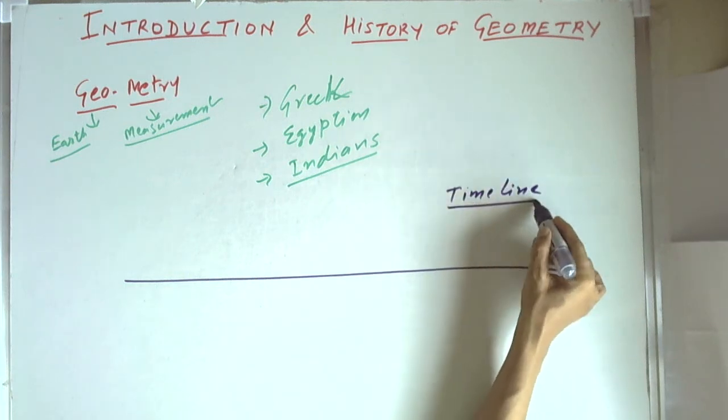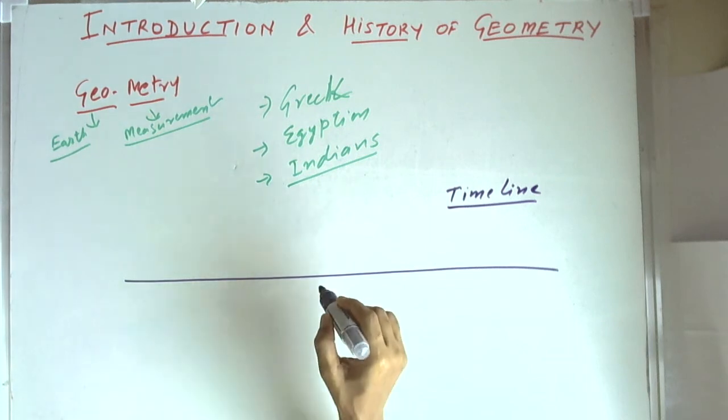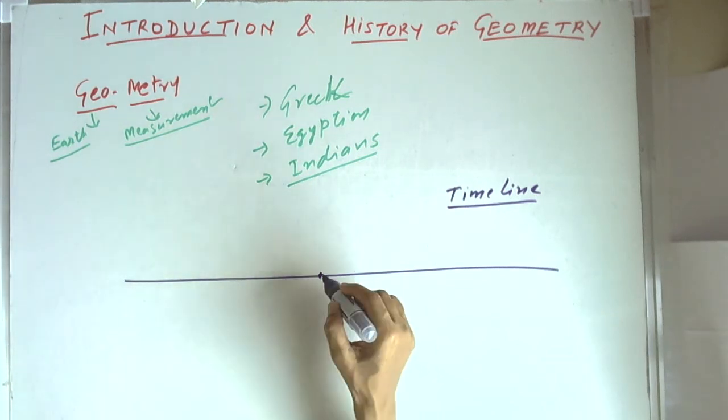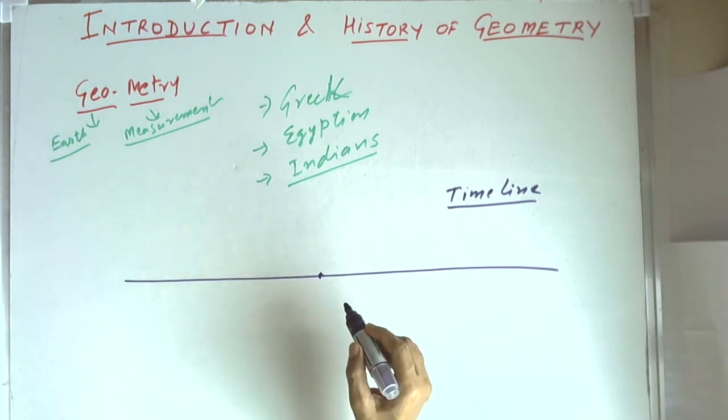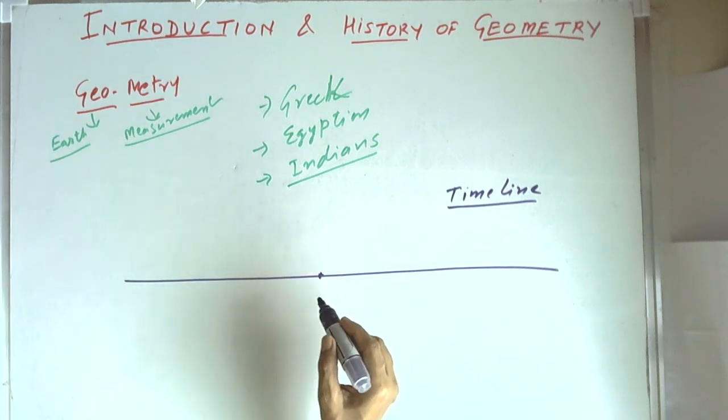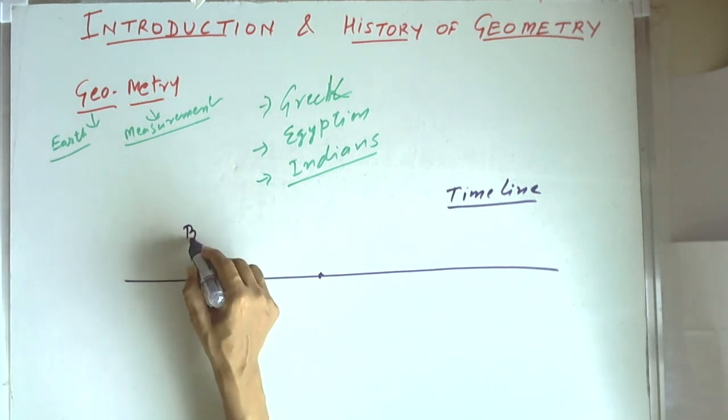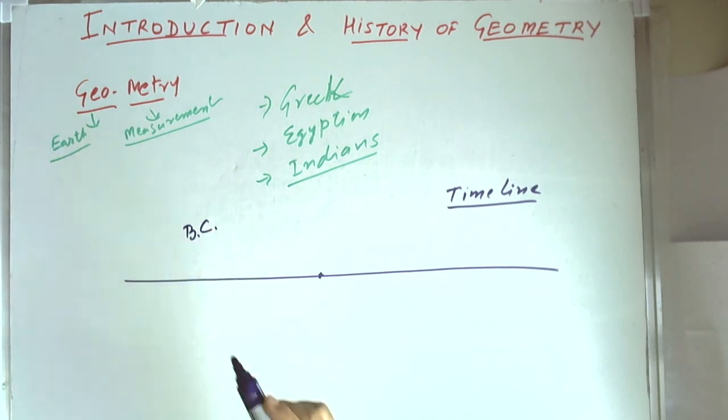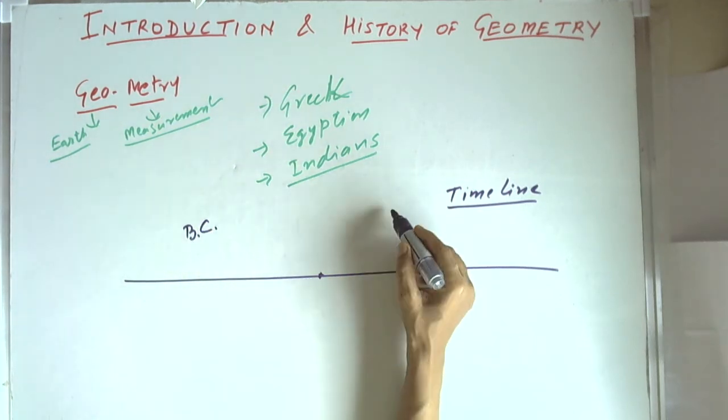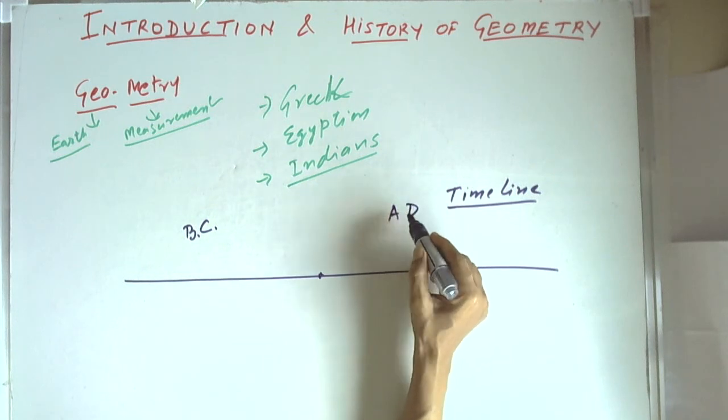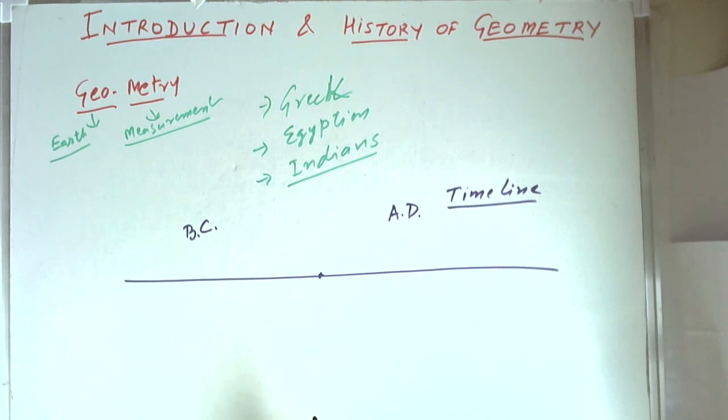Timeline is like a number line, the only thing is it does not have a zero. There is no concept of a zero year. It is related to the birth of Christ and the period before the birth of Christ is called BC and the period after the birth of Christ is called AD. AD stands for anno domini and BC stands for before Christ.